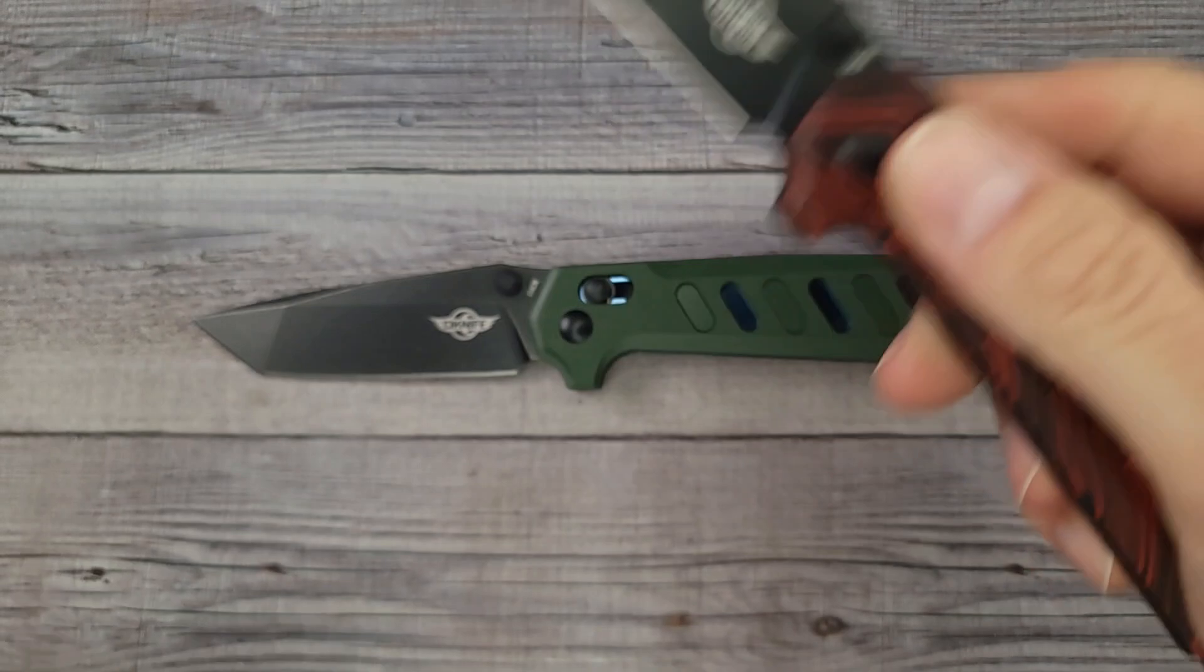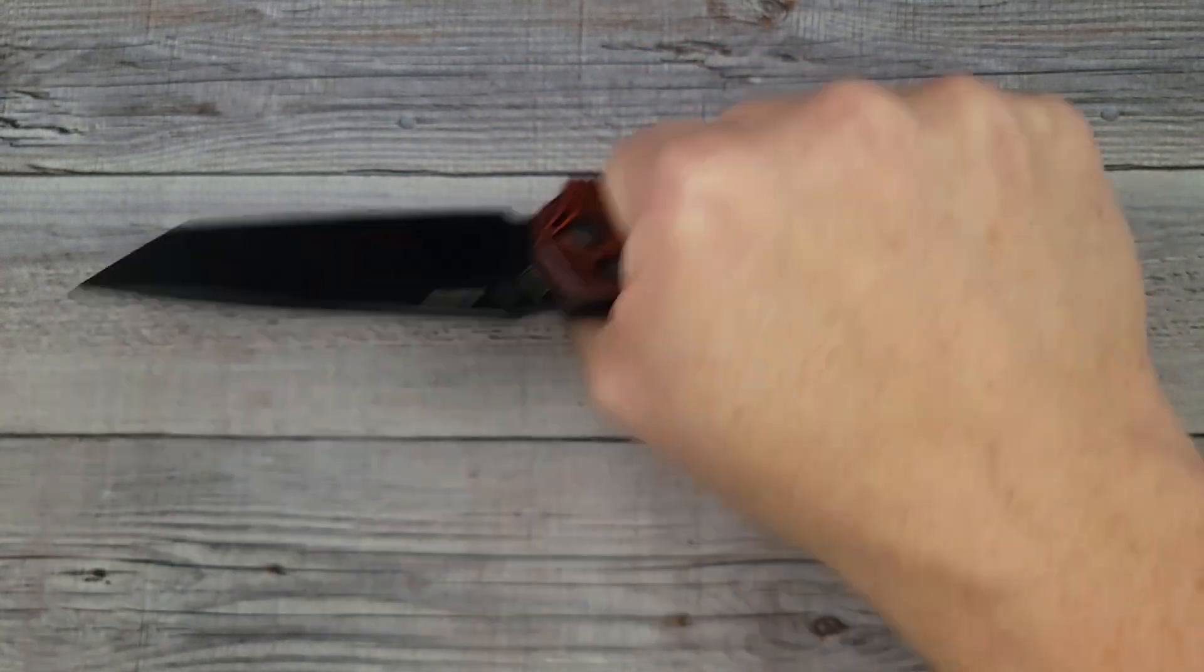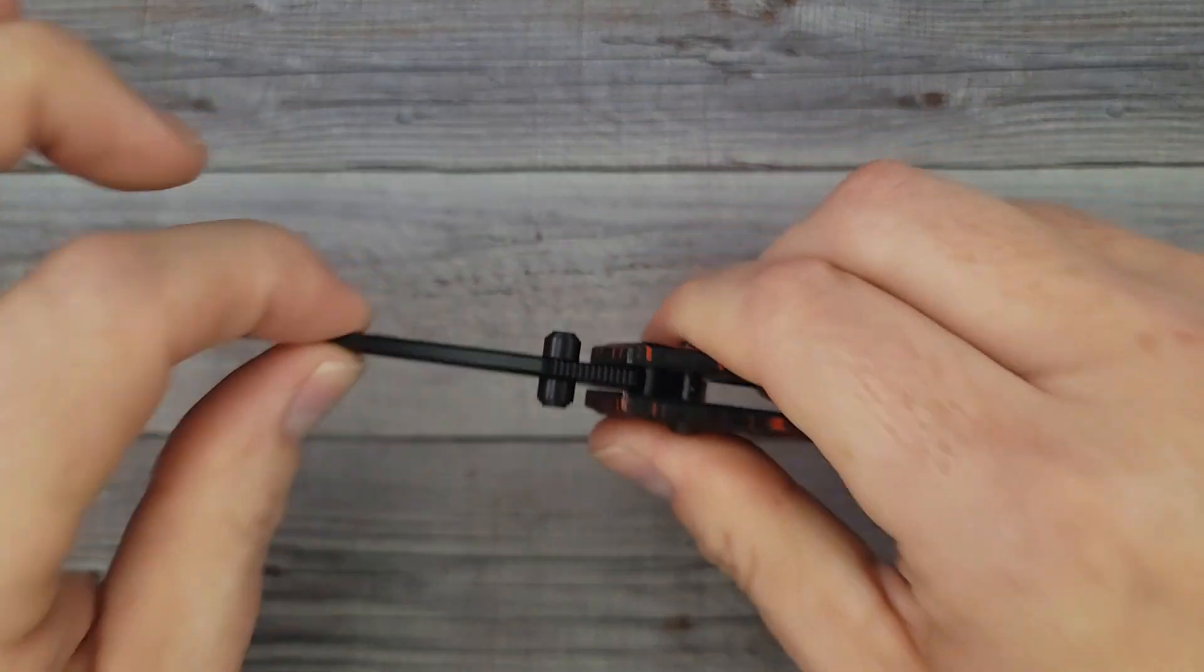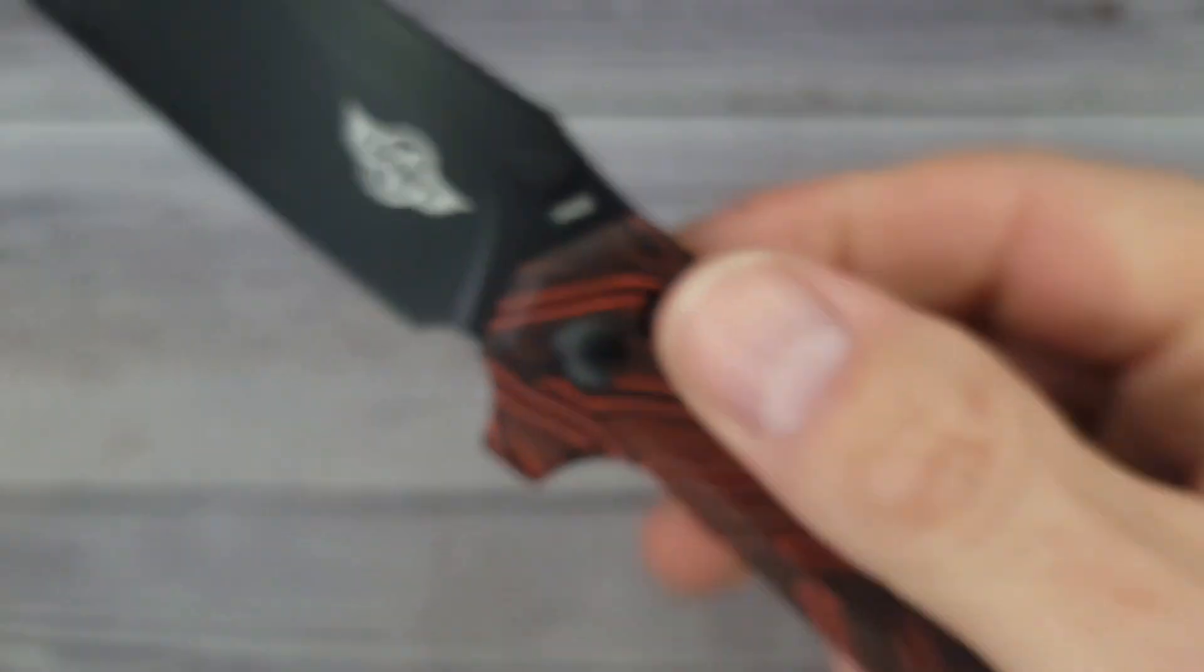This next one might be my all-time favorite as far as I can remember. Oh my goodness the Roboto, it is so good, it fits the hand so well. I've been telling you about this one lately because I've been carrying it, I've been using it. You know the size of my hand - I have large width hands and it fits my hand so well. It has good action, good ergos, good blade steel - 154CM blade steel baby.